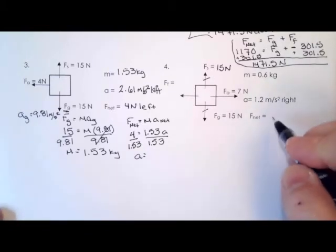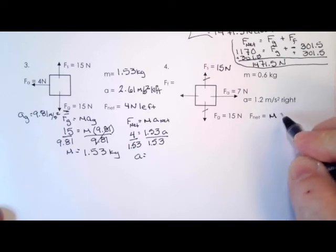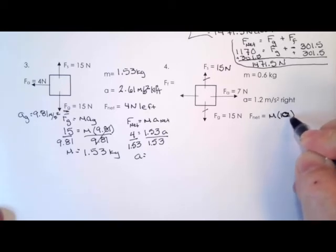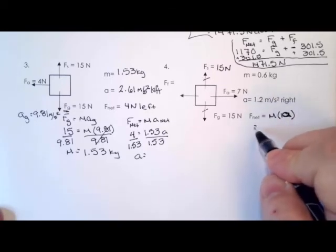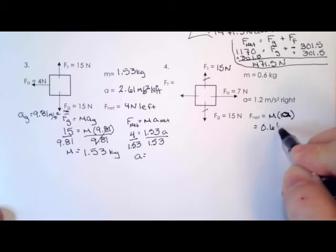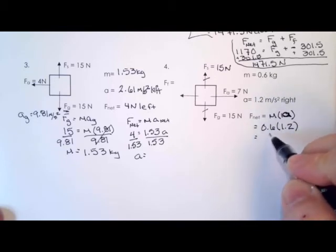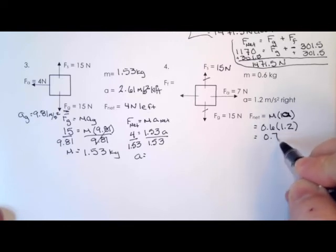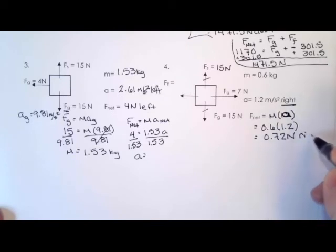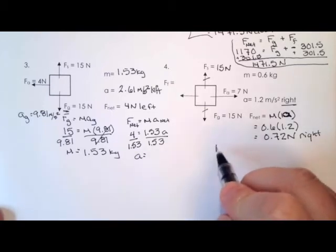So F_net equals the mass times the acceleration. F_net equals 0.6 times 1.2, and when you do that out, you end up with 0.72 newtons. And it's going to be in the same direction as the acceleration, so that's right.